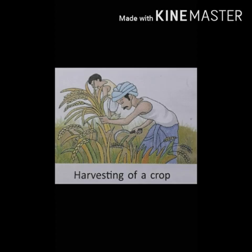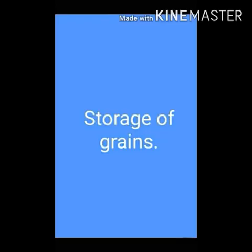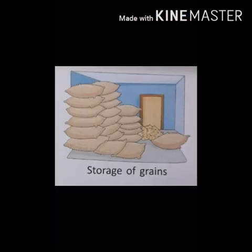The sixth stage is harvesting. Cutting down of ripe crop is called harvesting. The seventh and last stage is storage of grains. After harvesting the crops, grains need to be protected against moisture and pests such as fungi, rats, moles, birds, squirrels, and insects. Therefore, they should be stored in a godown or in airtight and sealed containers. Children, here Chapter 1 is completed. Thank you.